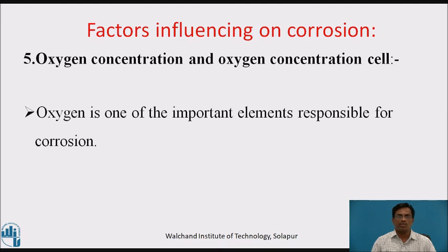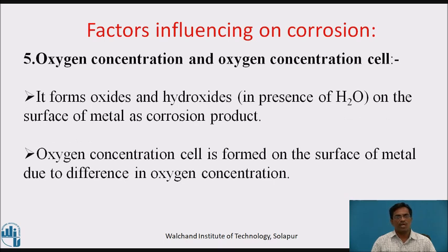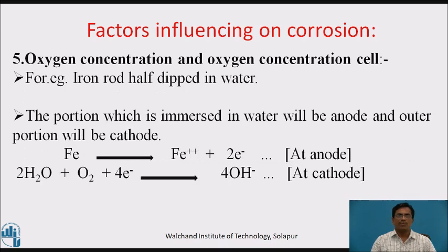Fifth, oxygen concentration and oxygen concentration cell — oxygen is one of the important elements responsible for corrosion. It forms oxide and hydroxide in the presence of water on the surface of metal as a corrosion product. The oxygen concentration cell is formed on the surface of metal due to difference in oxygen concentration. For example, in an iron rod half-dipped in water, the portion immersed in water acts as the anode and the outer portion acts as the cathode. At the anode, oxidation takes place, and at the cathode, reduction takes place. Ultimately, these anodic and cathodic reactions result in the formation of iron hydroxide, that is, rust.